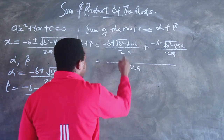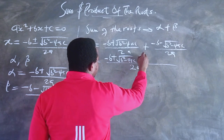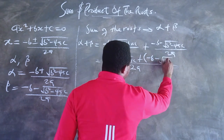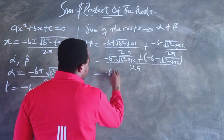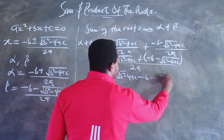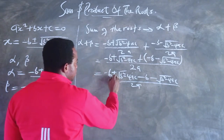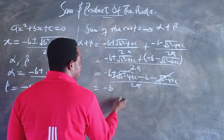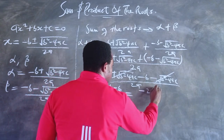Combining over the common denominator 2a, the numerator becomes: (-b + √(b² - 4ac)) + (-b - √(b² - 4ac)). Expanding the brackets, we get -b + √(b² - 4ac) - b - √(b² - 4ac). Notice that the square root terms cancel each other out, leaving -b - b in the numerator, which is -2b, all over 2a.